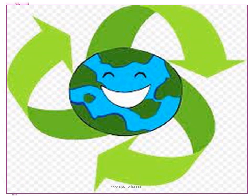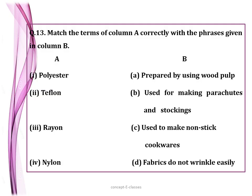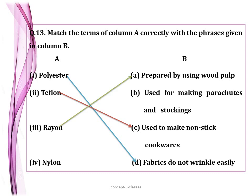Question number thirteen: match the terms in column A — polyester, Teflon, rayon, nylon — with phrases in column B. Polyester: fabrics which do not wrinkle easily. Teflon: used to make non-stick cookware. Rayon: a semi-synthetic fiber prepared by using wood pulp. Nylon: a very strong synthetic fiber used for making parachutes and stockings.